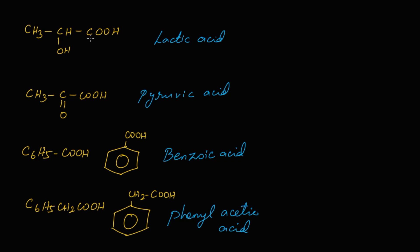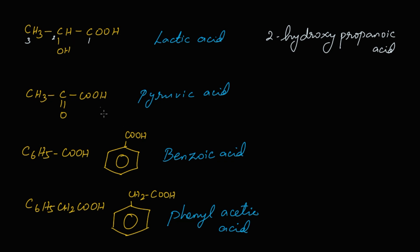Lactic acid: first carbon, second carbon, third carbon — at the second carbon a hydroxy group is present, and there are three carbons in the straight chain, so the IUPAC name is 2-hydroxypropanoic acid. Pyruvic acid: at the second carbon an oxo (keto) group is present in a three-carbon chain, so it is 2-oxopropanoic acid.